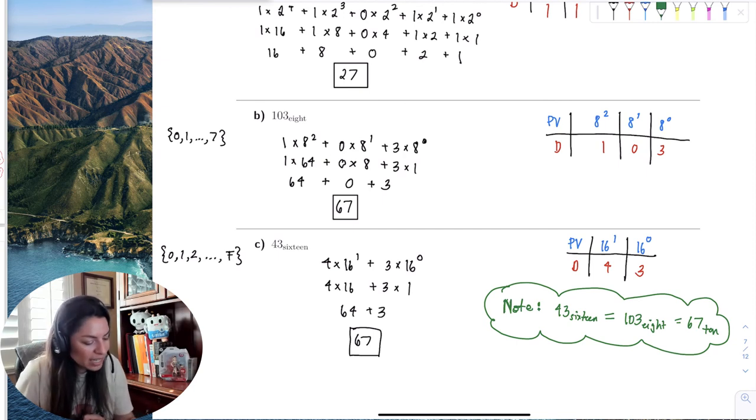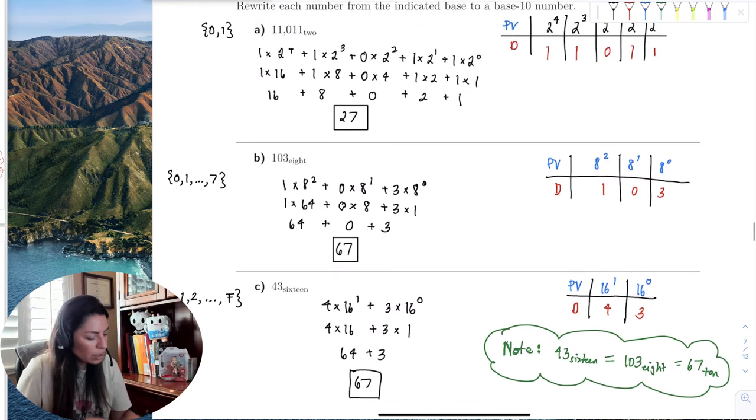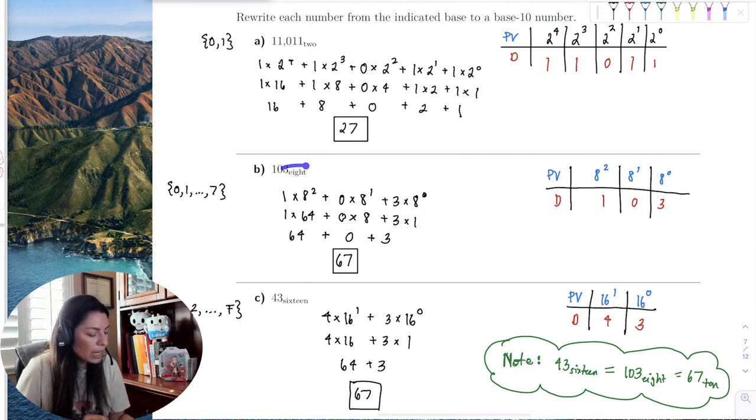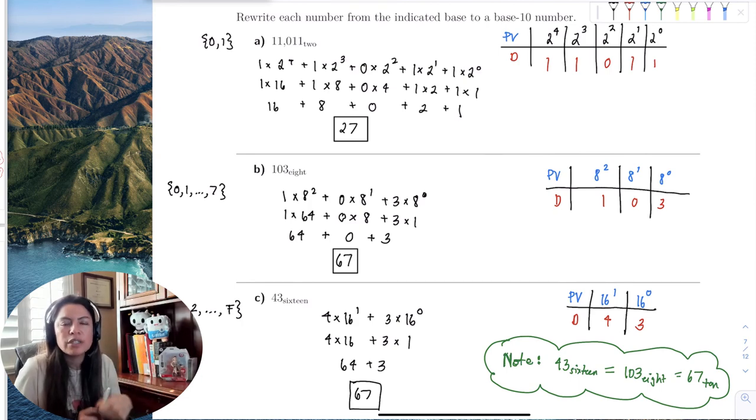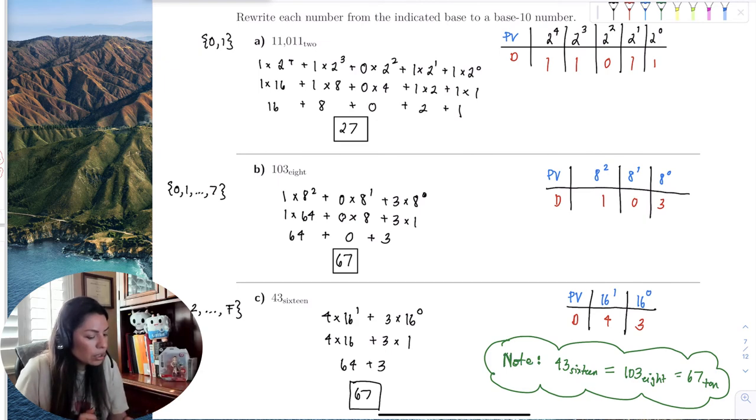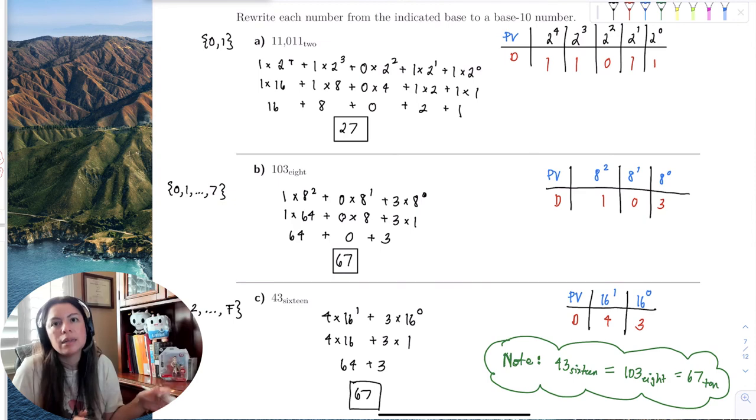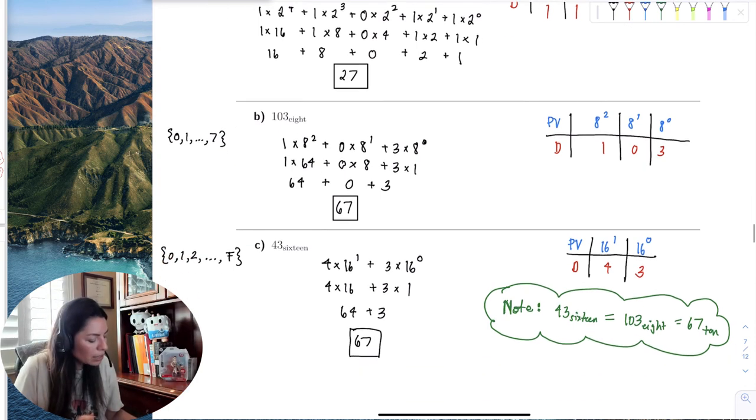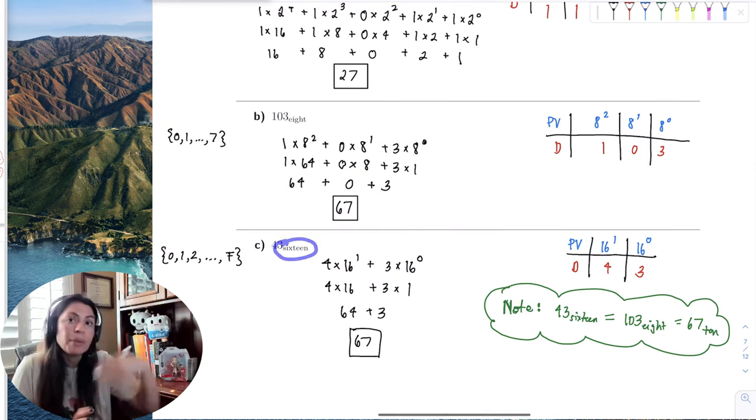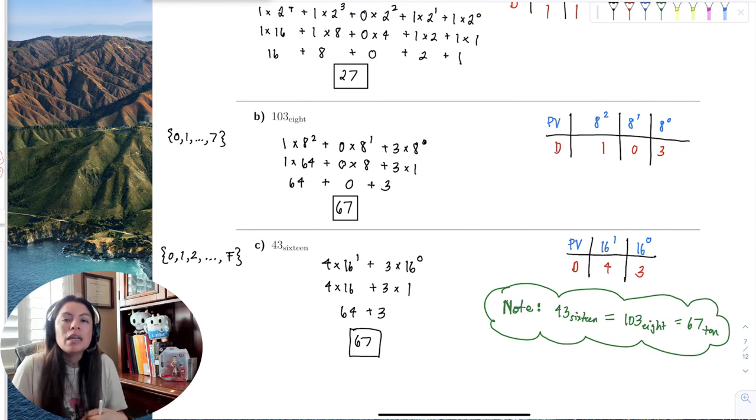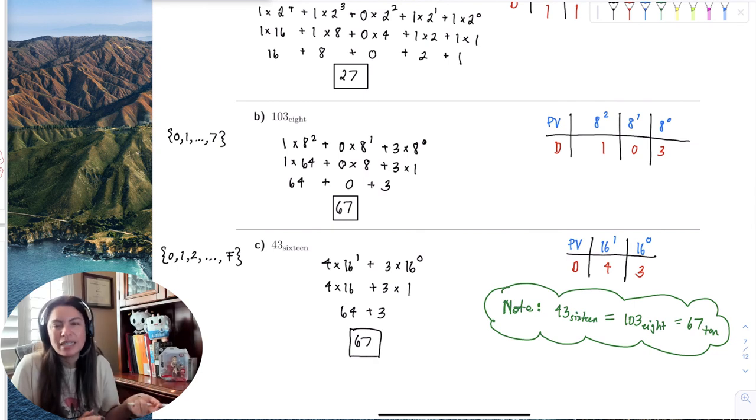The second thing I want you to notice is that base 16 is larger than base 10. Before, we had base 2, base 8, and base 5 from the previous video, which are all smaller than base 10. Recall that those numbers were smaller in base 10 than the original base, because you could always fit more groups of the base into the number than base 10. However, when you go past base 10 to base 16, now you're at a base greater than base 10. Now you can fit more groups of 10 into the number than the base. That's why the base 10 number is larger. It's almost the opposite of what happens when the base is smaller.